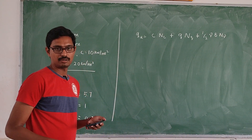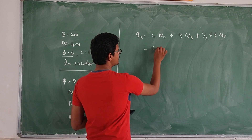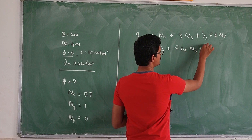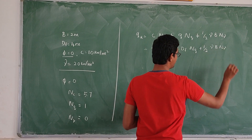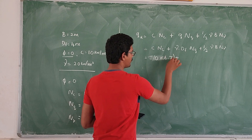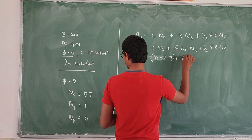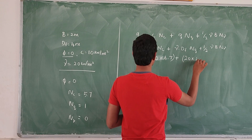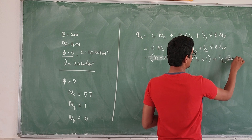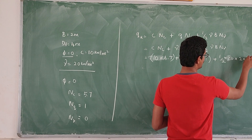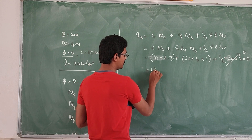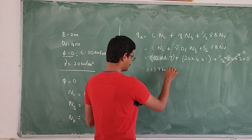This is the formula to find out the ultimate bearing capacity. Now we can substitute all the values: C into Nc plus gamma into Df into Nq plus half into gamma into B into N-gamma. So substituting: C is 10 into Nc is 5.7, plus gamma 20 into Df 4 meter into Nq 1, plus half into gamma 20 into B 2 into N-gamma 0. This last term becomes 0.